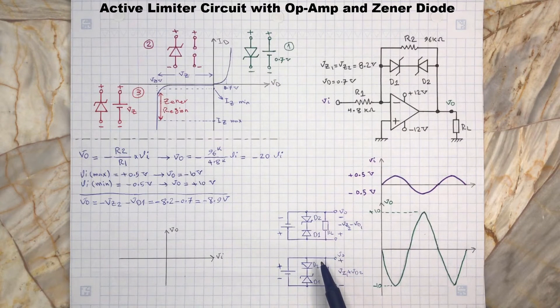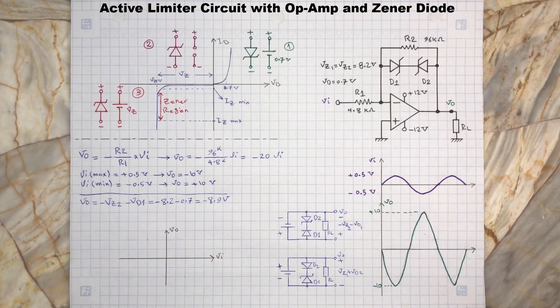So what does this mean? Imagine output Vo is negative 8.9 volts. Then D2 gets reverse biased because its anode terminal is connected to the op-amp output terminal and its cathode is connected to D1, which is now forward biased and has a negative 0.7 volts at its cathode terminal.